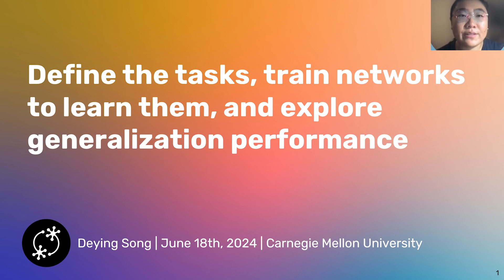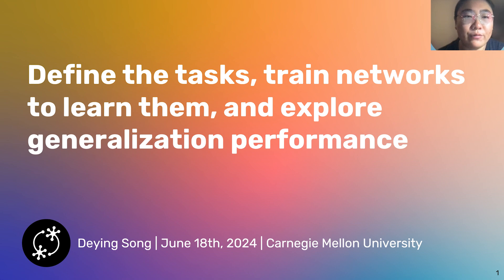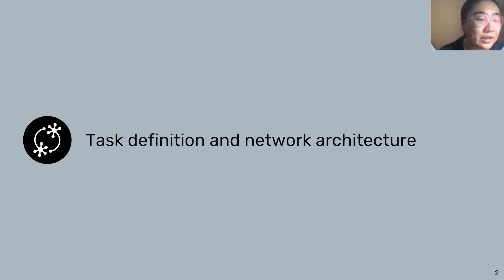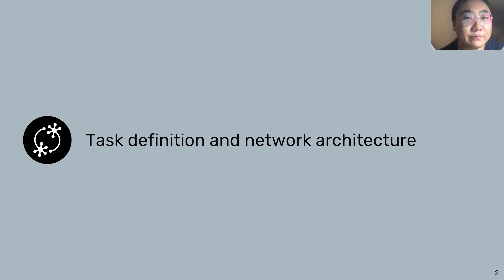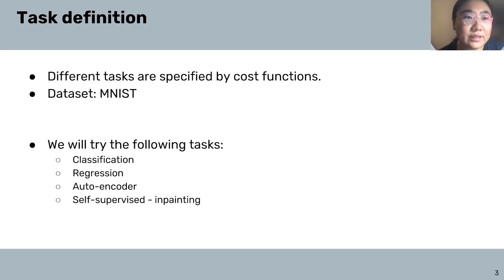Specifically, we will define a task, train the networks to learn them, and explore generalization performance. In the first part, we will look at the task definition and the network architecture that we will be using. For artificial neural networks, different tasks are specified by cost functions.